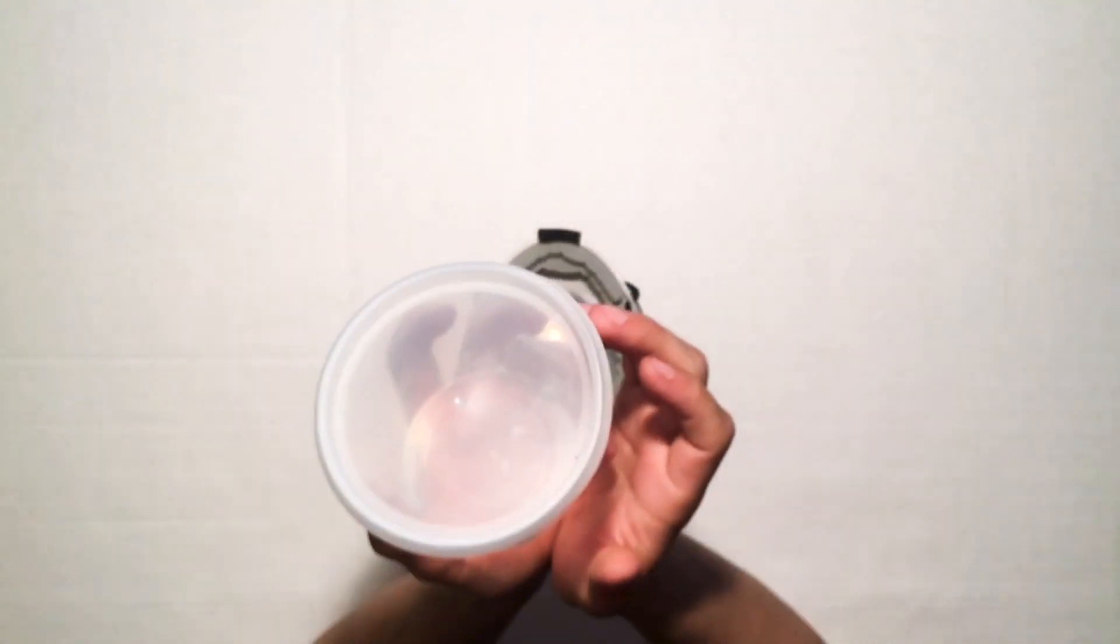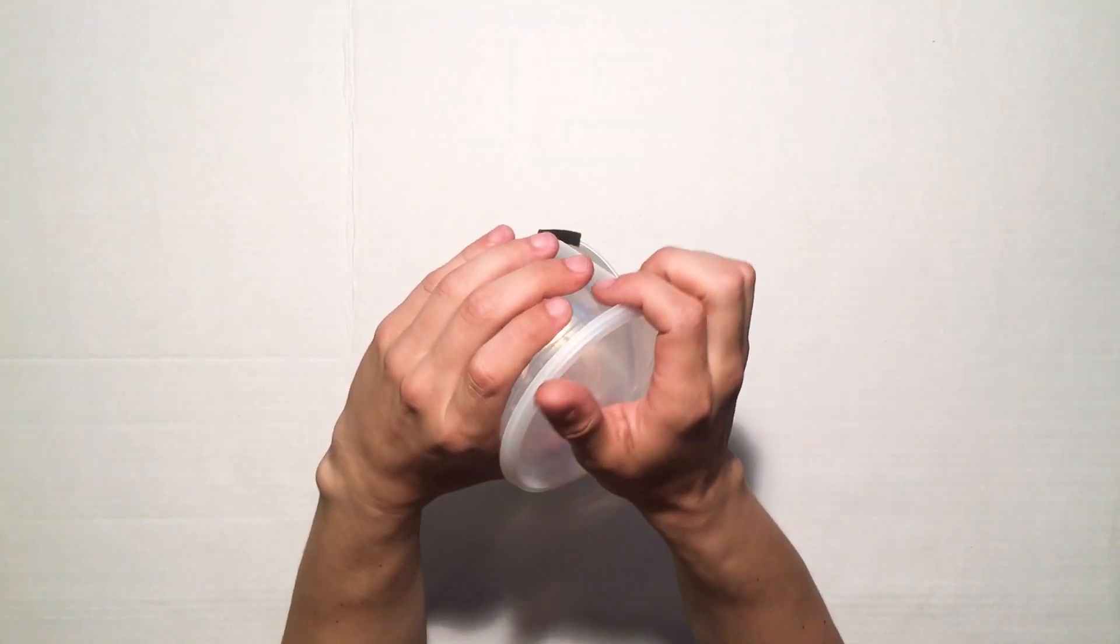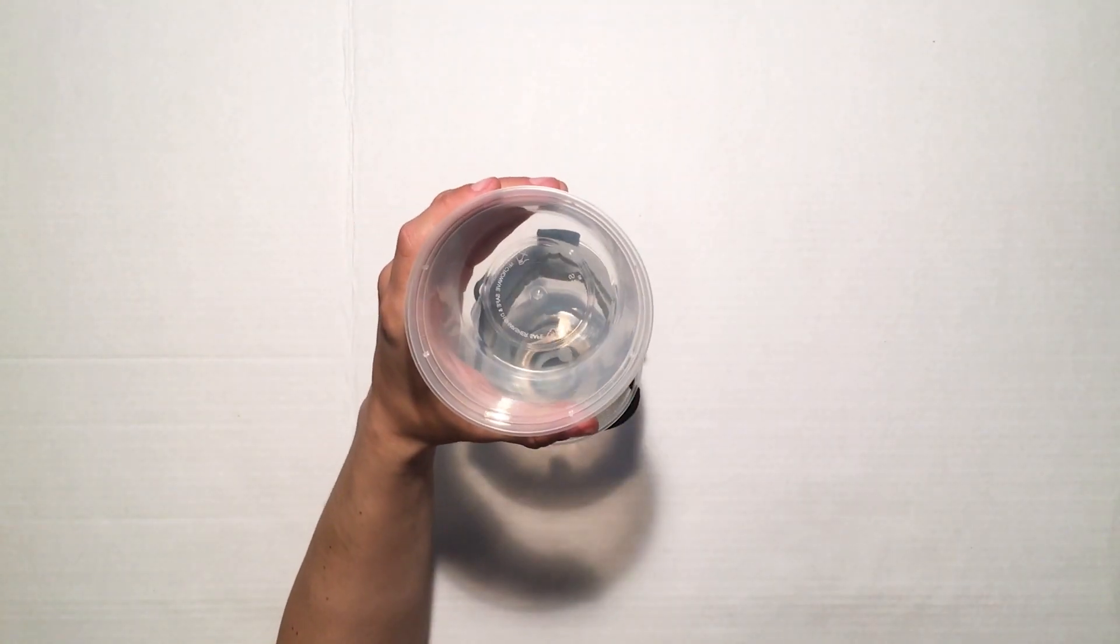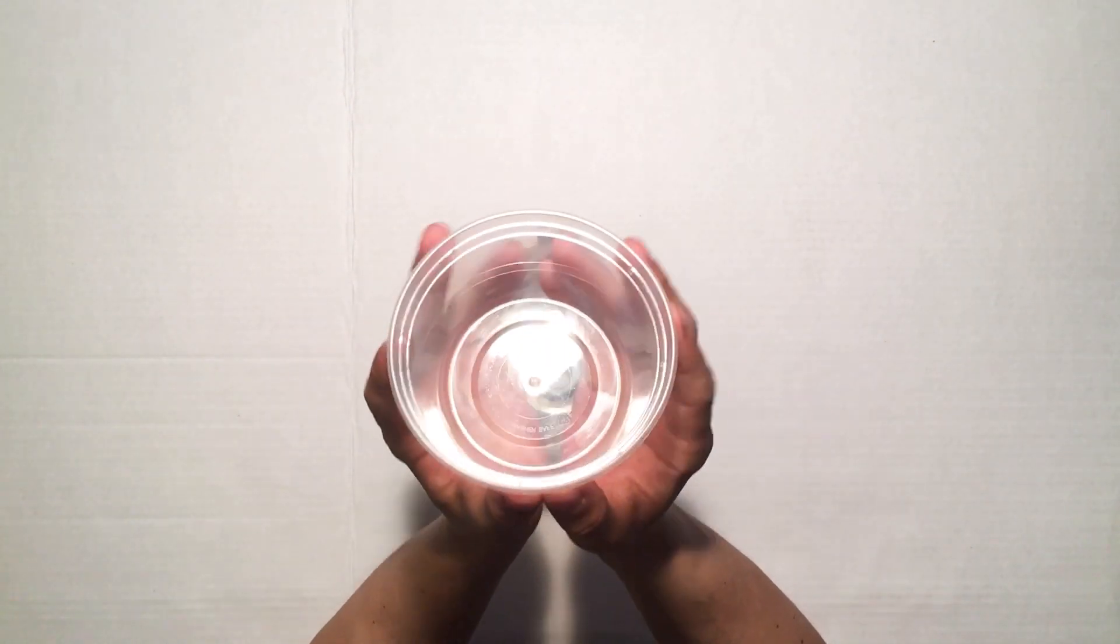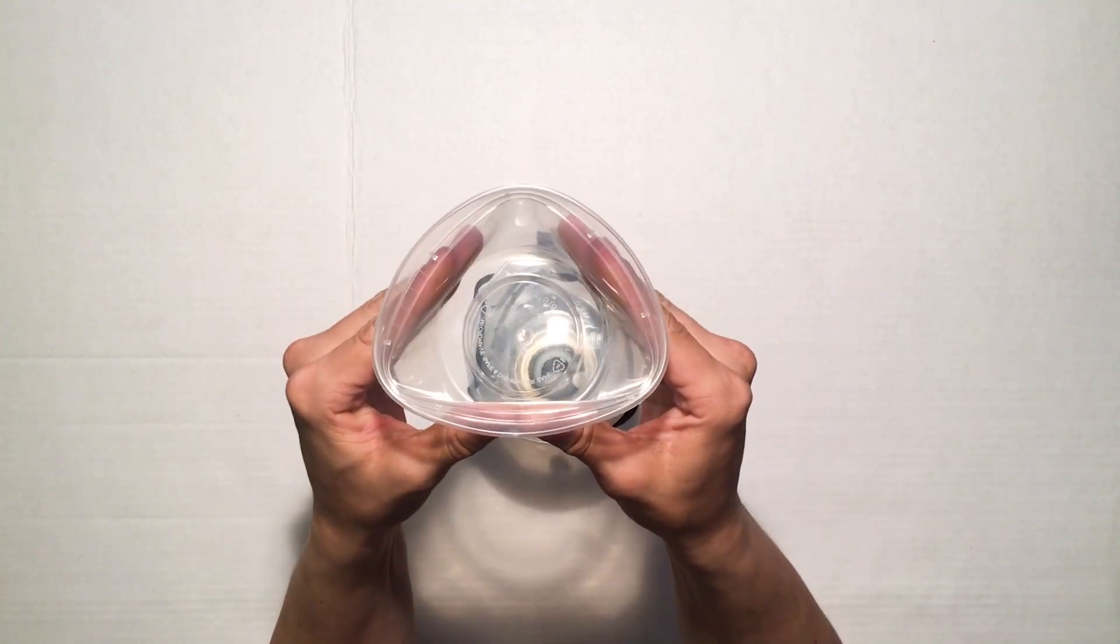This thermoplastic has a vacat temperature, that's the point at which the material becomes malleable, of only 86 degrees Celsius, meaning we can use hot water to form the container for a precise fit.